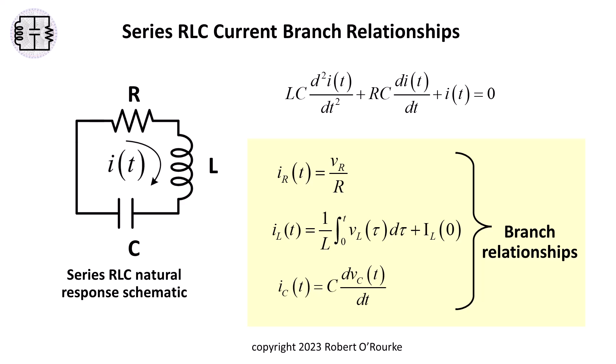We know the branch relationships for resistors, inductors, and capacitors. These branch relationships define the current through a circuit element as a function of the voltage across the circuit element.